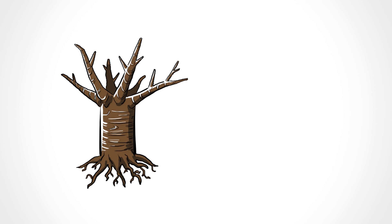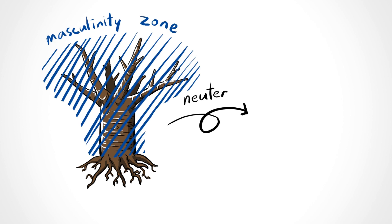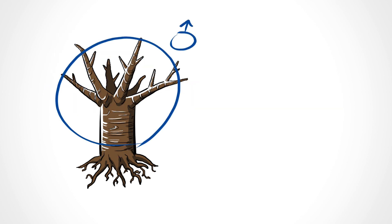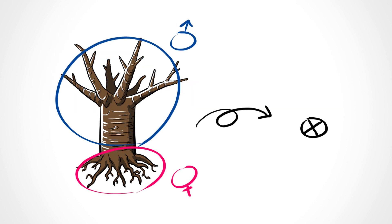The things that fall out of the tree are neuter because they're out of the masculinity zone of a tree. The leaves fall off the tree in the winter, so the leaf is das Blatt. And wood has to be cut out of a tree, so it's das Holz. Masculine, feminine, neuter.